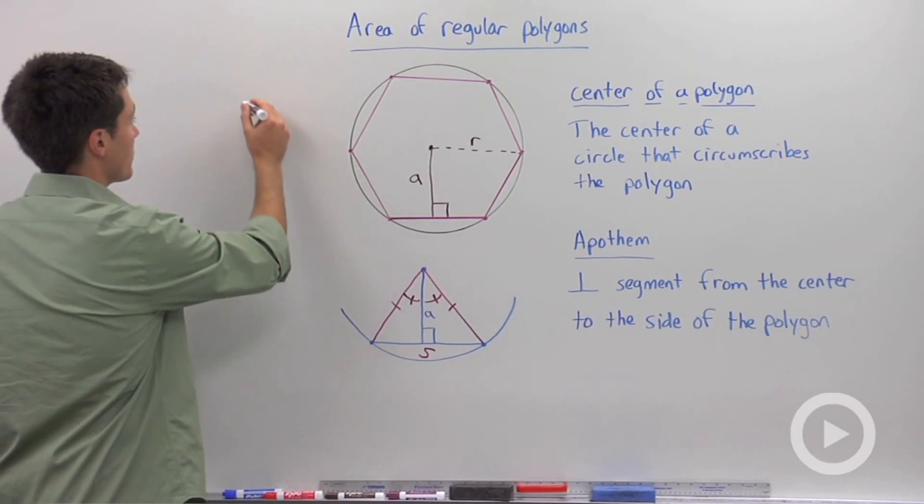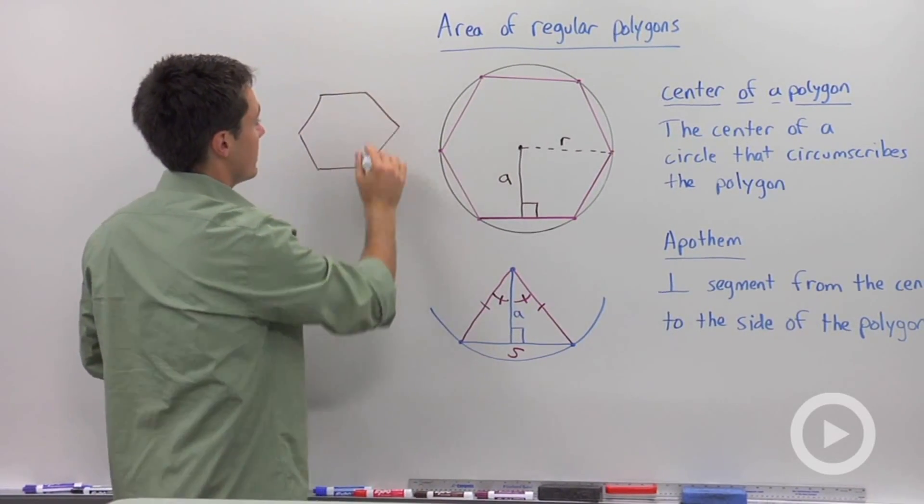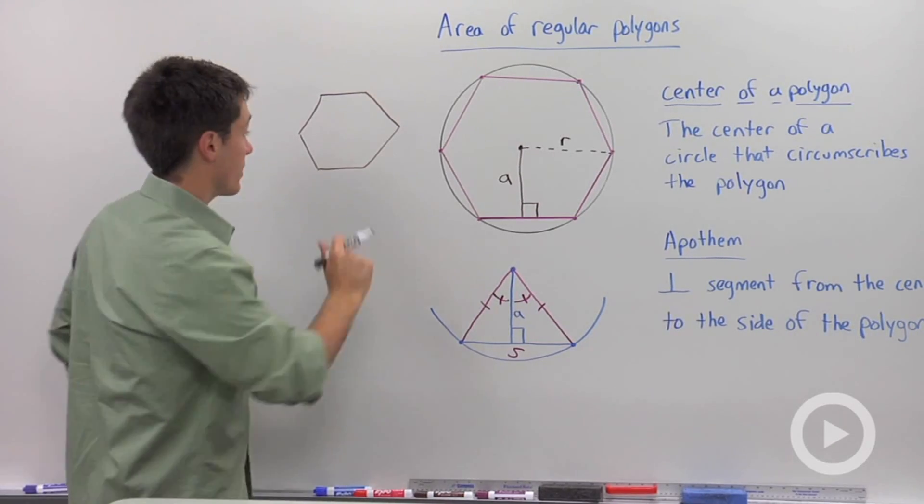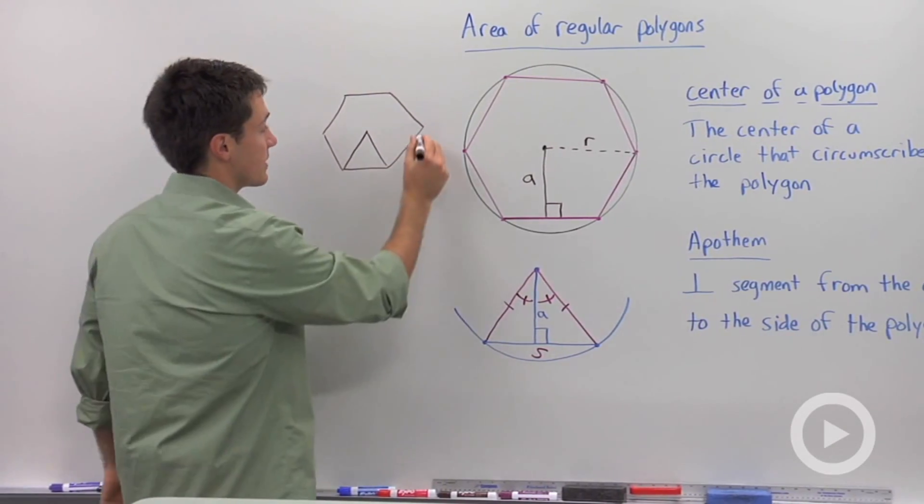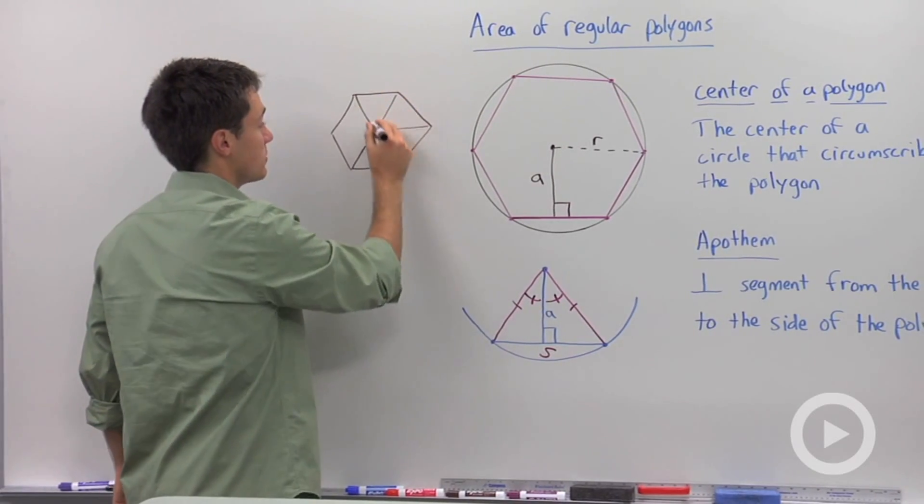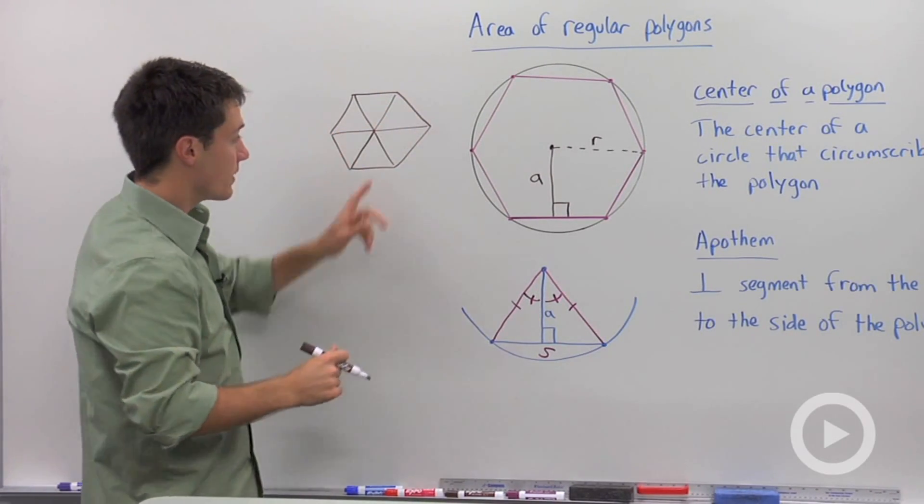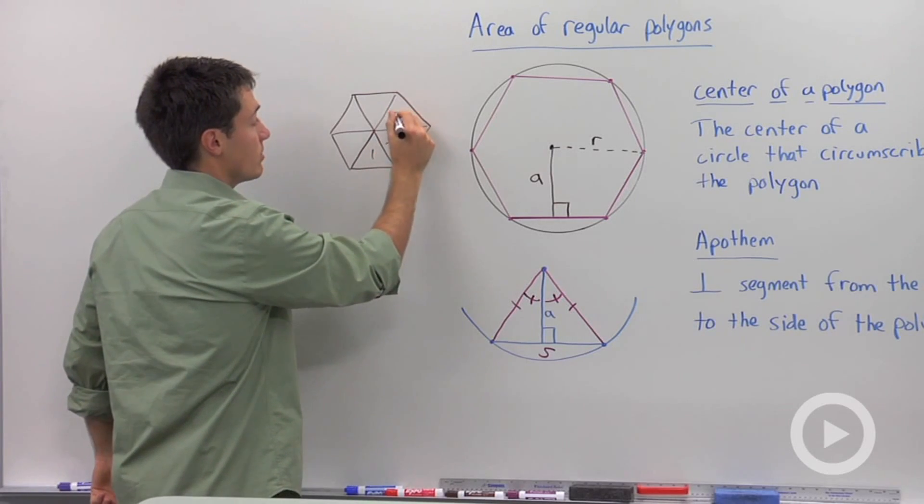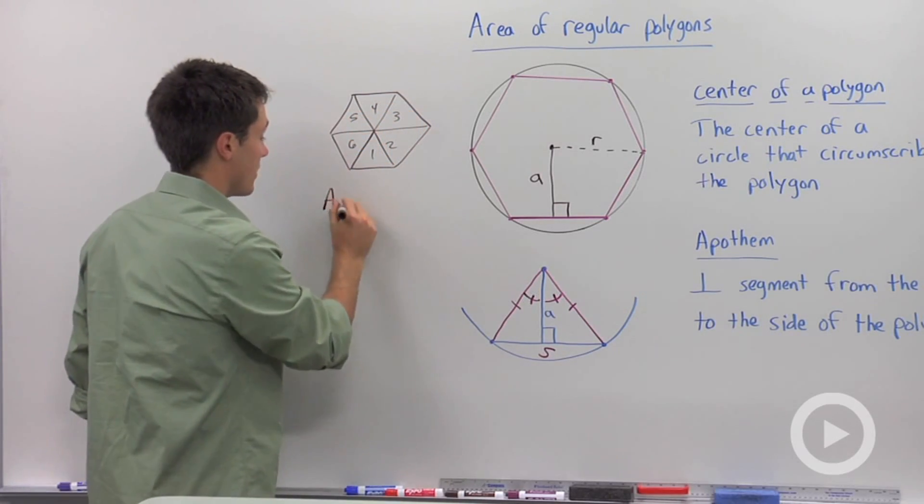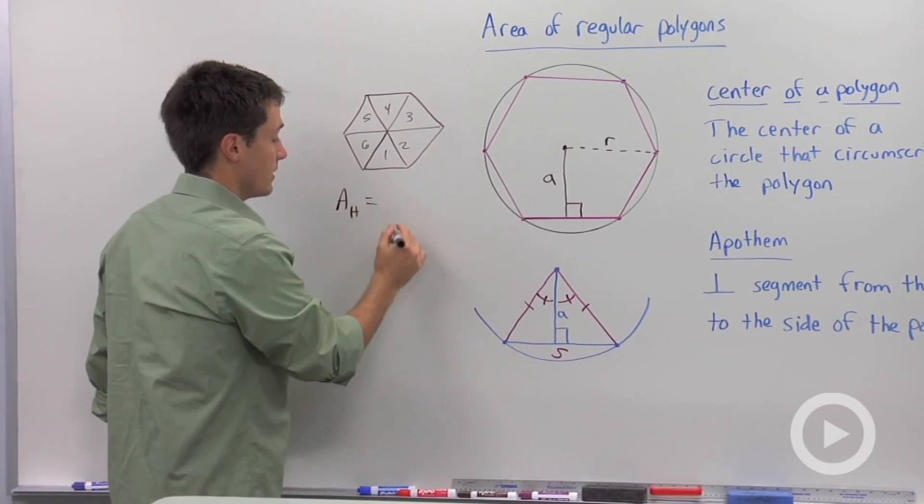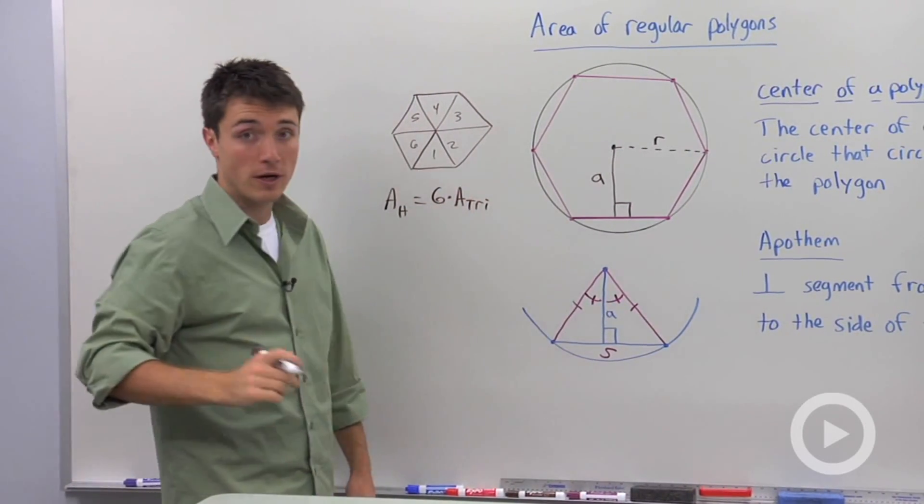What we're going to do is we're going to think, well, Mr. McCall, I have no idea how to calculate that area. But what I do know how to calculate is the area of a triangle. So if I divide this hexagon into congruent triangles, and they'll all be congruent because it's regular, then all I have to do is add up the area of my six triangles. So you can say the area of the hexagon is equal to six times the area of one of those triangles.